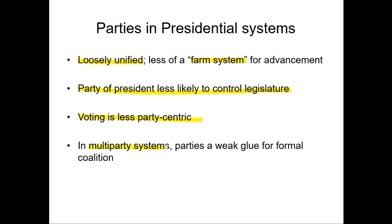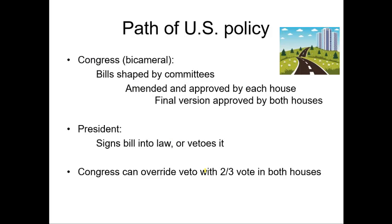In multi-party systems, particularly where you have a coalition — mostly in parliamentary systems — the parties serve as weak glue for the formal coalition that rules government, which is less likely in a two-party presidential system like America's. The path of U.S. policy is much more of a long, deliberative path. In Congress we have two houses, and bills are shaped by committees. We have about 15 to 20 standing committees in each house.